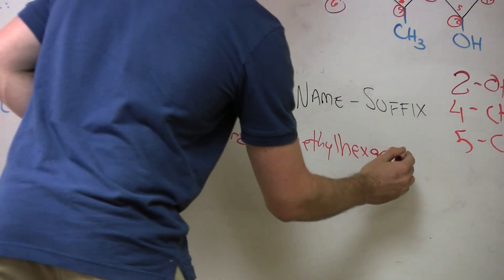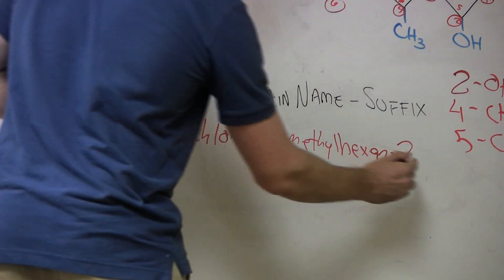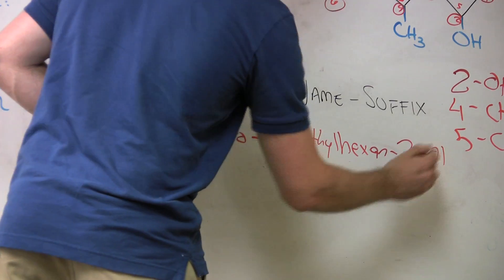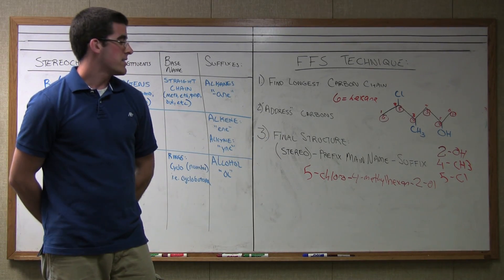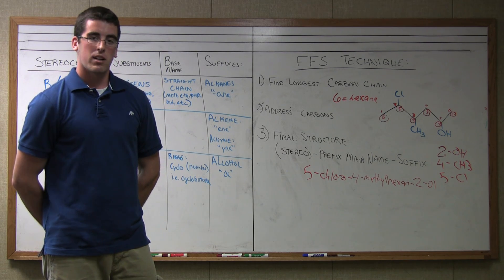and indicate where this is at the second position. I'm going to put a two, and finally cap it off with 'ol' to indicate the alcohol. So our final name is 5-chloro-4-methylhexan-2-ol, and that is how you name organic compounds.